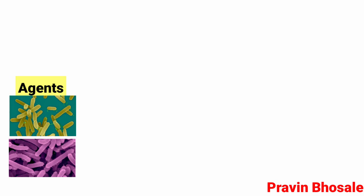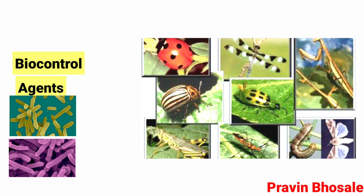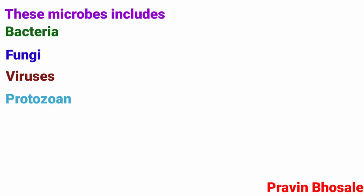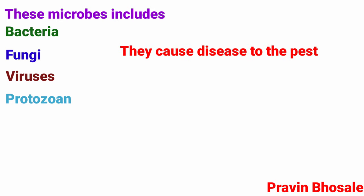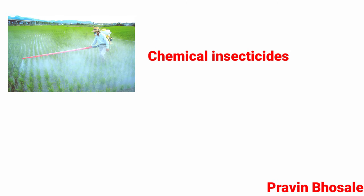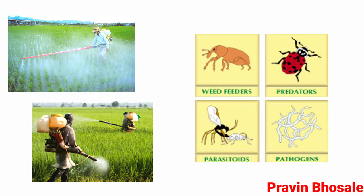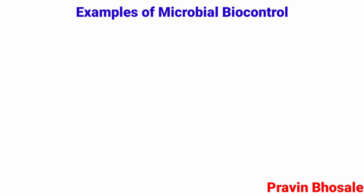The agents employed for this are called biocontrol agents. These microbes include bacteria, fungi, viruses, and protozoans. Either they cause disease to the pest, compete with them, or kill them. Chemicals, insecticides, and pesticides are extremely harmful to human beings and also pollute our environment. Hence, the use of biocontrol measures will greatly reduce our dependence on toxic chemicals and pesticides.